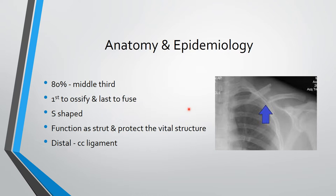Looking at the anatomy and epidemiology: 80% of cases are middle third clavicle fractures, 5% are medial third, and 15% are lateral one third. The clavicle bone is the first to ossify and the last to fuse, with last fusion occurring at around 20 to 25 years with the sternum and sternoclavicular joint. The clavicle is S-shaped.